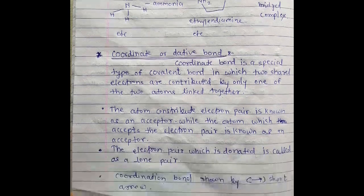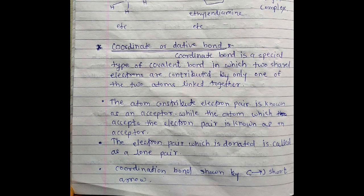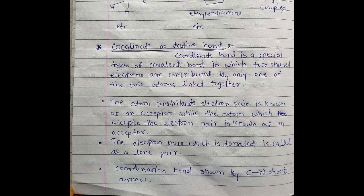The atom that contributes electron pair is known as donor, while atom which accepts electron pair is known as acceptor. The atom which accepts electrons is called acceptor, and atom which donates electrons is called donor.